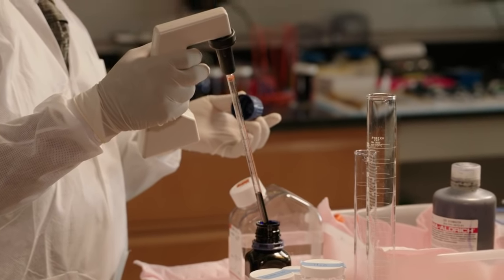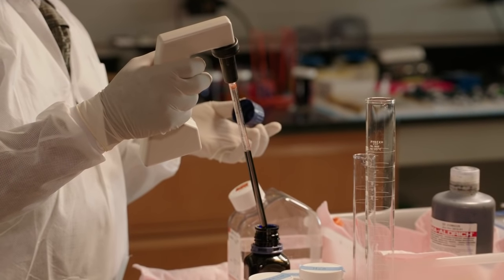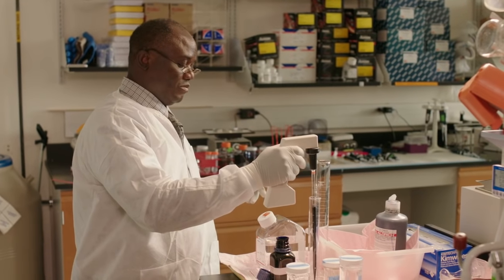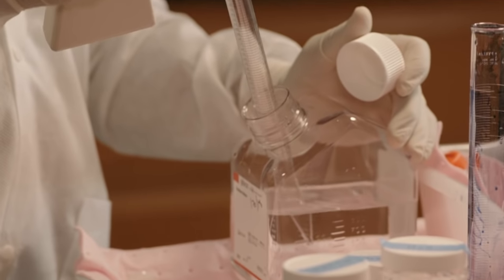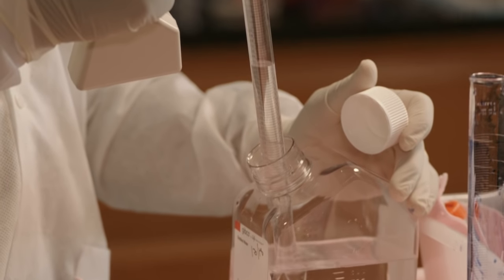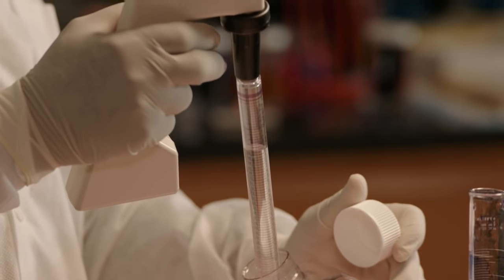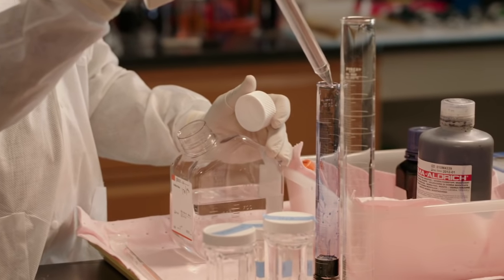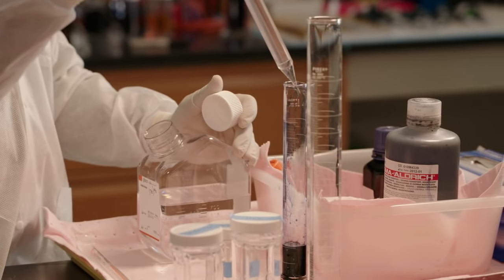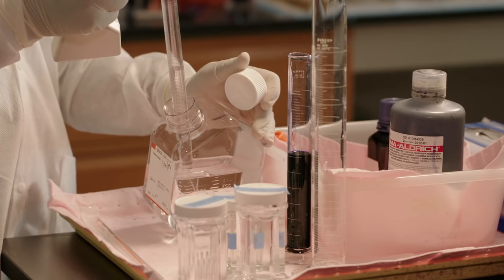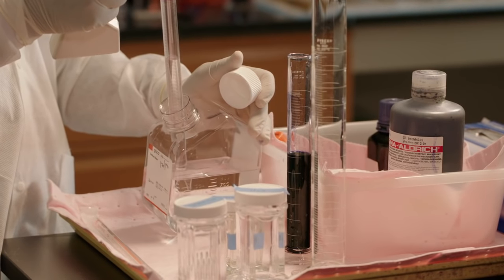We are going to prepare working Giemsa stain. You will take 10 milliliters of the stock Giemsa stain and then you add 90 milliliters of buffered distilled water to make a total volume of 100 milliliters. This is a 50 milliliter serological pipette. So I'll prepare 50 initially, and then add 40 milliliters. This comes to a 1 in 10 dilution of the stock Giemsa stain.